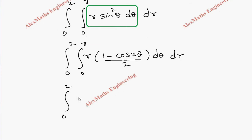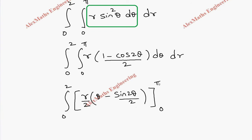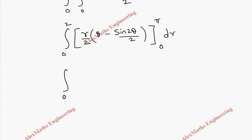r is constant so it stays as is. The integration of 1 is θ, and the integration of cos 2θ is sin 2θ / 2, and the whole expression is divided by 2. We apply the limit 0 to pi for θ. When we substitute the upper limit π, sin 2π = 0. When we substitute the lower limit, everything is 0.